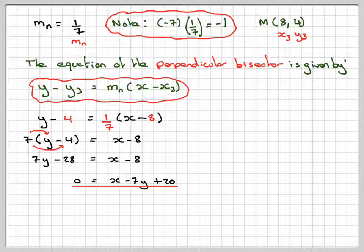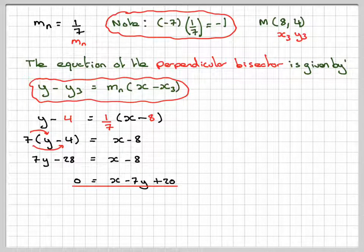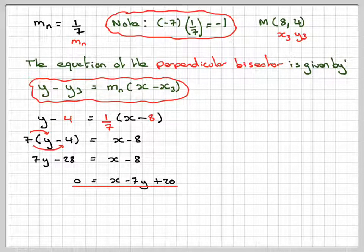So this has been a video to show you how to find the equation of the perpendicular bisector once you have been given two points. The question is guided because you're told how to do steps A and B before actually attempting C. I hope you've understood, and I thank you very much for watching.